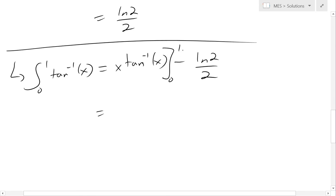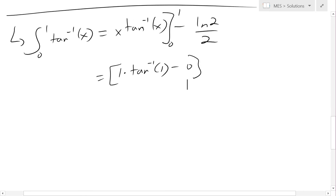So now we plug these inside. So when we plug in the 1 there, this will just be 1 times inverse tan of 1, minus 0, because just plug in the 0 there, it just becomes 0. So minus ln 2 over 2.